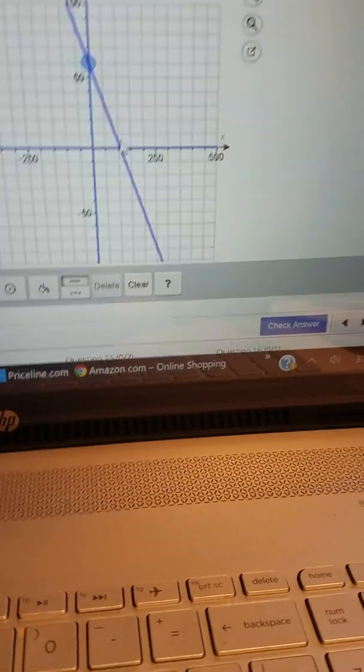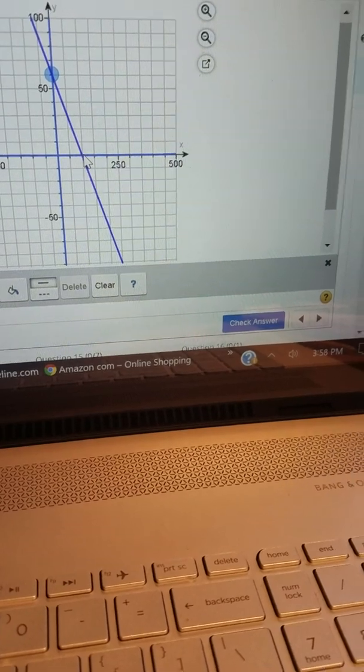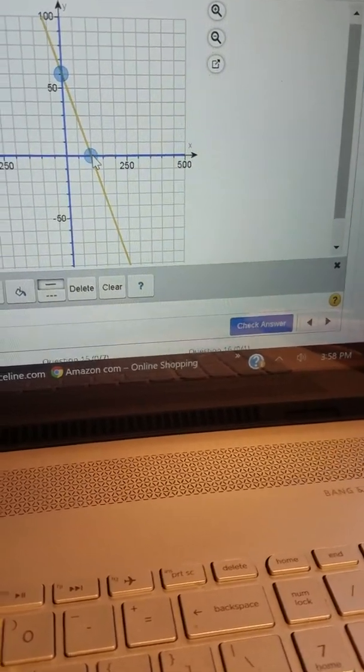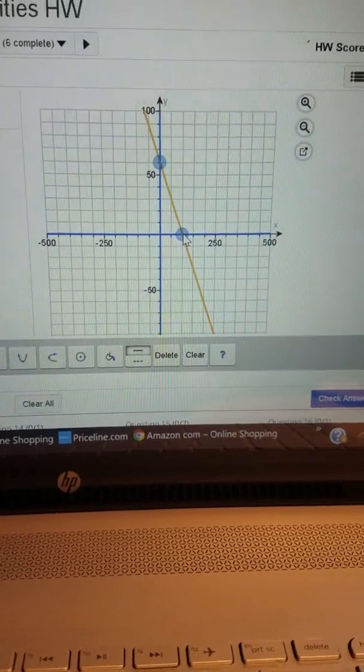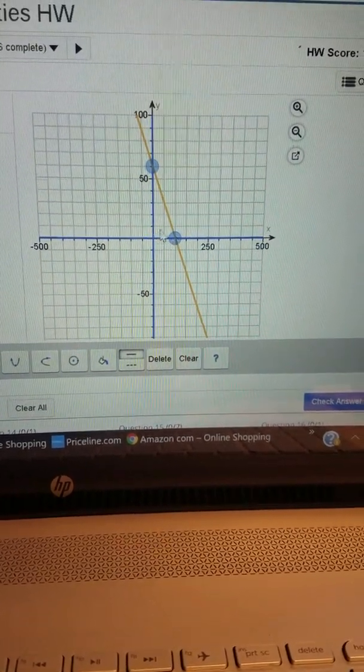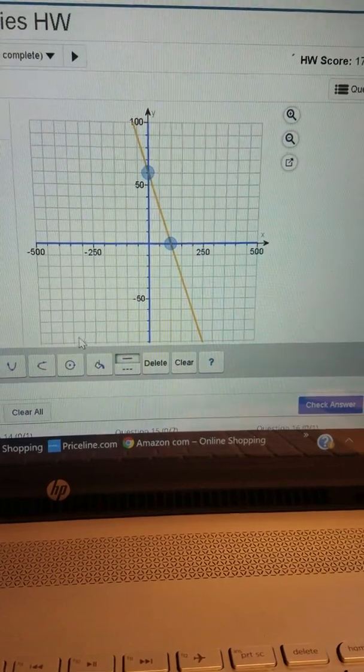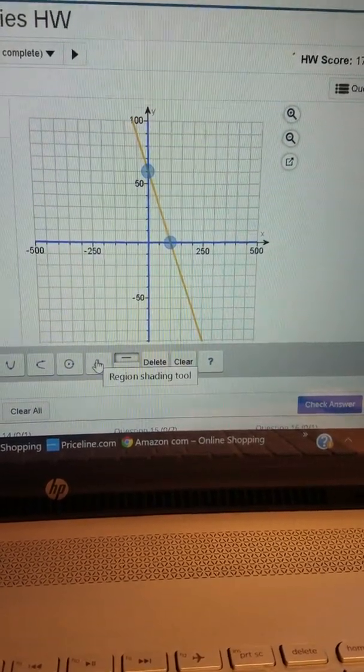So 100 comma 0 should be my second point on the line and the inequality was less than or equal to. So if I put 0, 0 into that inequality I get true on the left side of this sloped line.